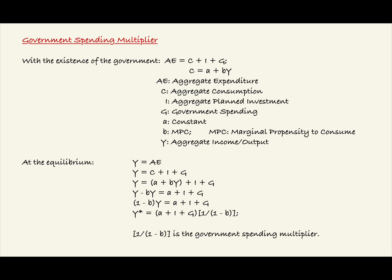This factor, 1 over the quantity 1 minus B, is the government spending multiplier, where B is the MPC or marginal propensity to consume.